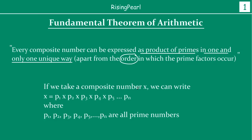So if we take a composite number x, then x can be written as a product of primes: p1 times p2 times p3, and so on, where each of them are actually prime numbers. For example, 6 is a composite number, so we can write 6 as 2 times 3, where both 2 and 3 are prime.